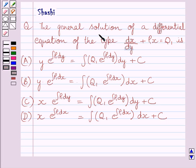The general solution of a differential equation of the type dx upon dy plus p1x is equal to q1 is, we have to choose the correct answer from a, b, c and d.